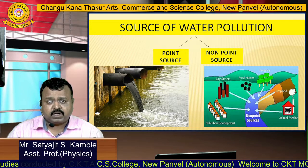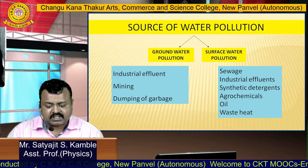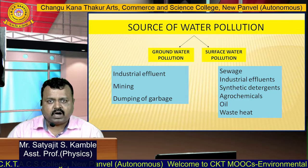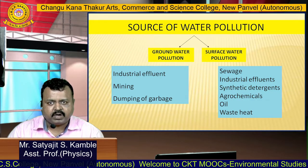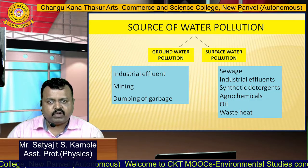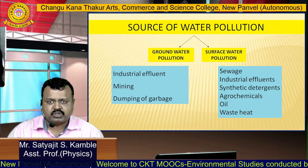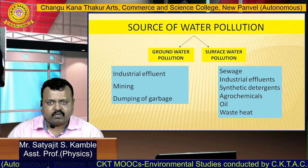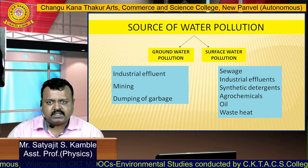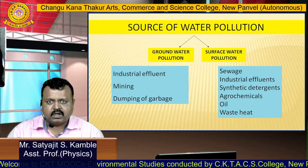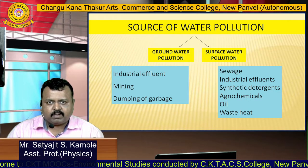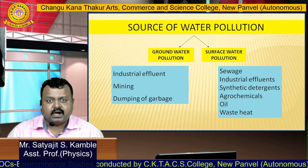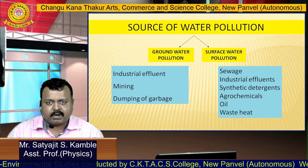Water pollution can also be classified in two ways. If underground water sources are polluted, then we call it groundwater pollution. If surface water like a river is polluted, then we call it surface water pollution. Groundwater pollution is caused by industrial effluents, mining, dumping of garbage, etc.